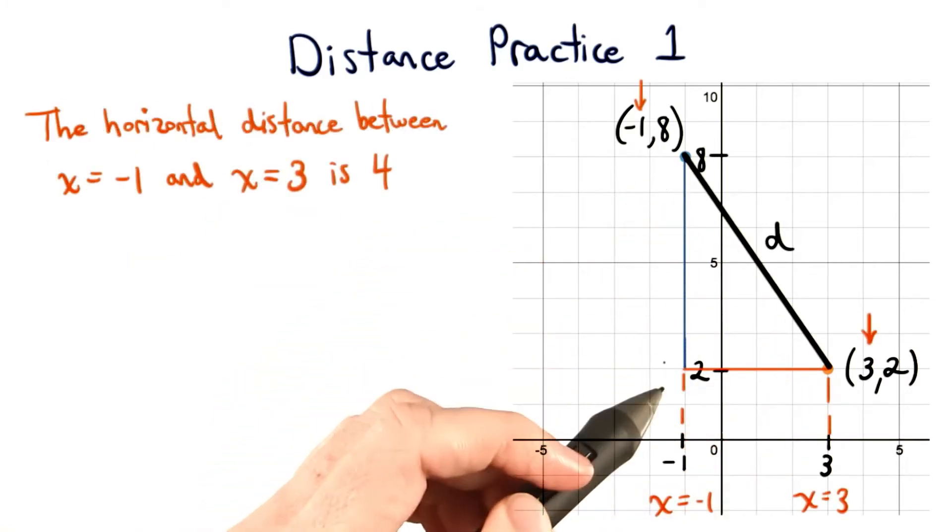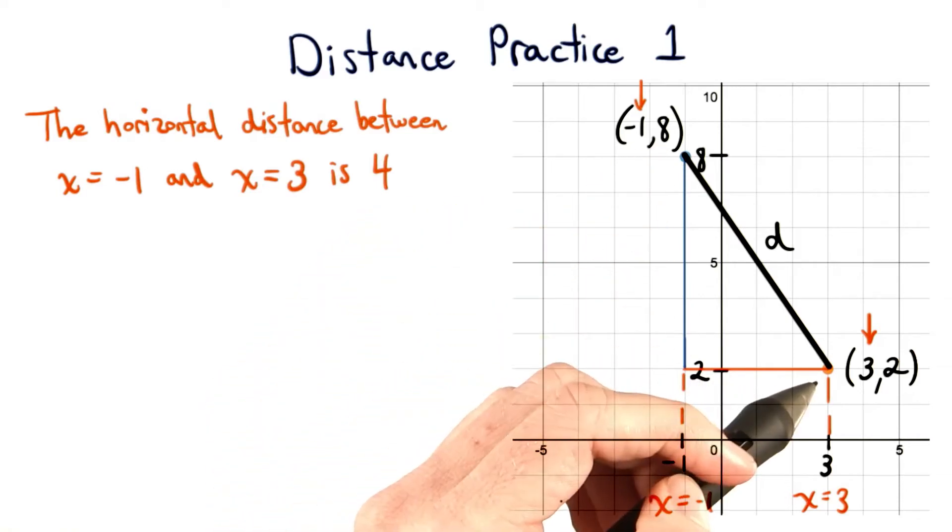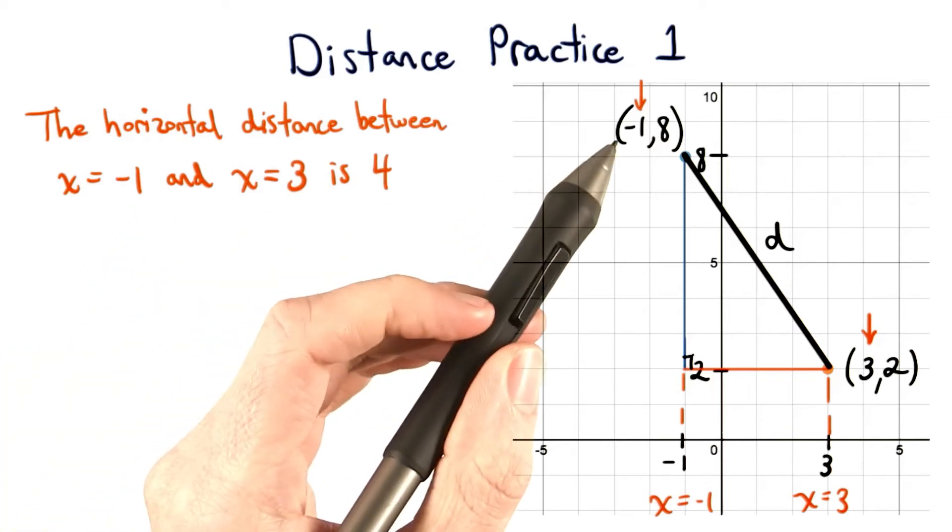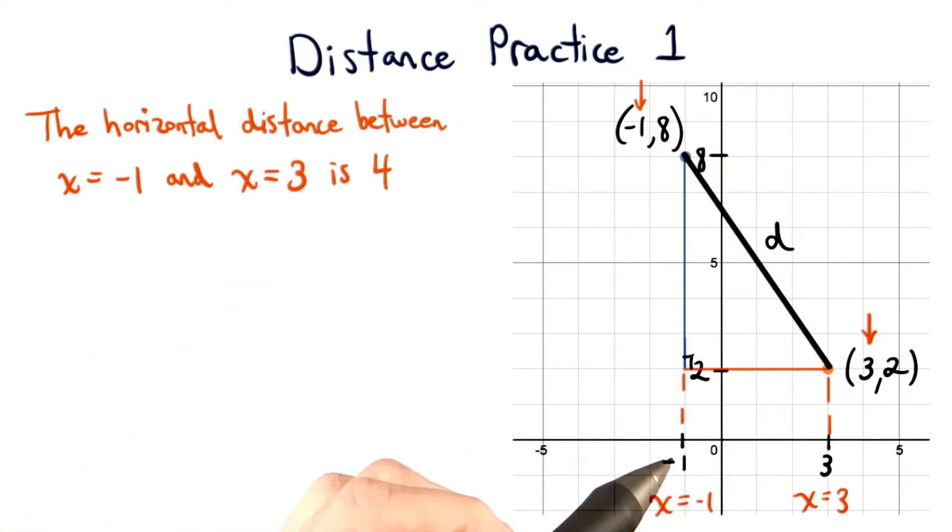So we need to set up our right triangle with the vertical distance and the horizontal distance. The horizontal distance between x equals negative 1 and x equals positive 3 is 4.